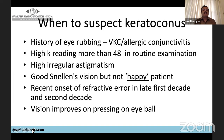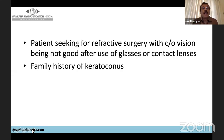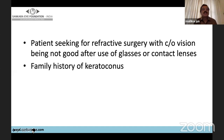Some patients complain that their vision improves on pressing on the eyeball — this happens because whatever irregularity or astigmatism is present gets somewhat corrected when you press on the eyeball. Patients unhappy with glasses or contact lens wanting refractive surgery should raise suspicion of keratoconus. Also, a positive family history of keratoconus is an important clue.